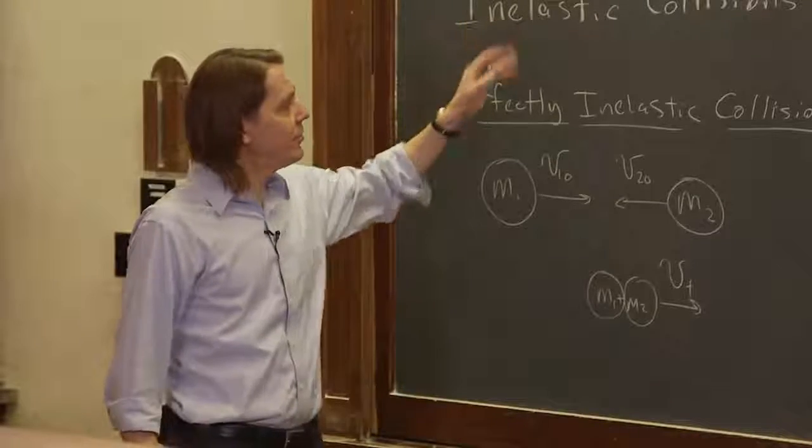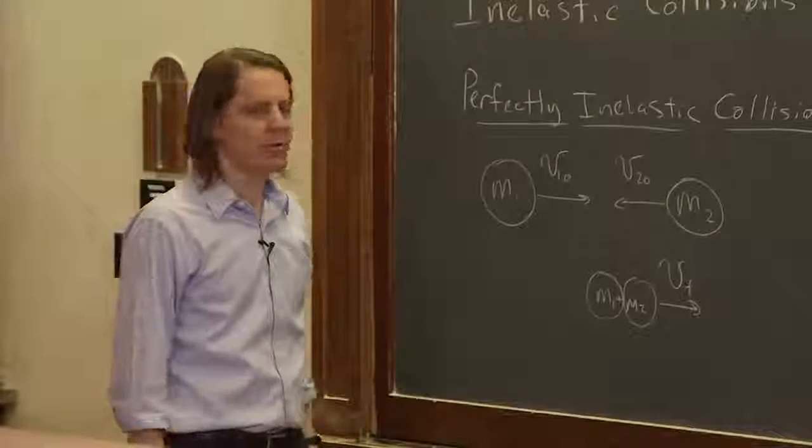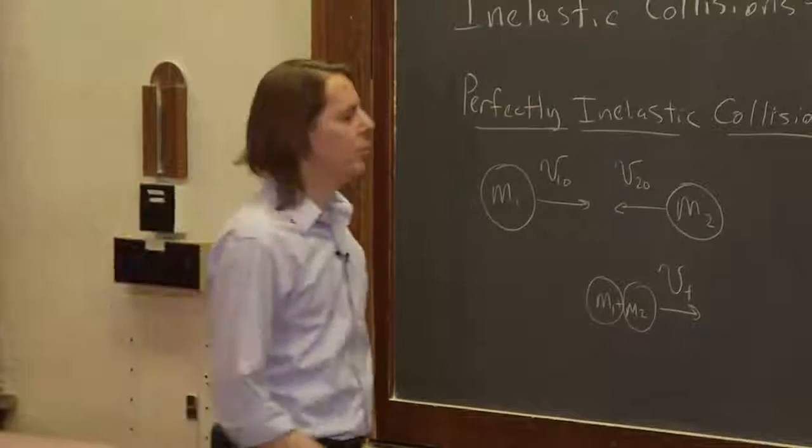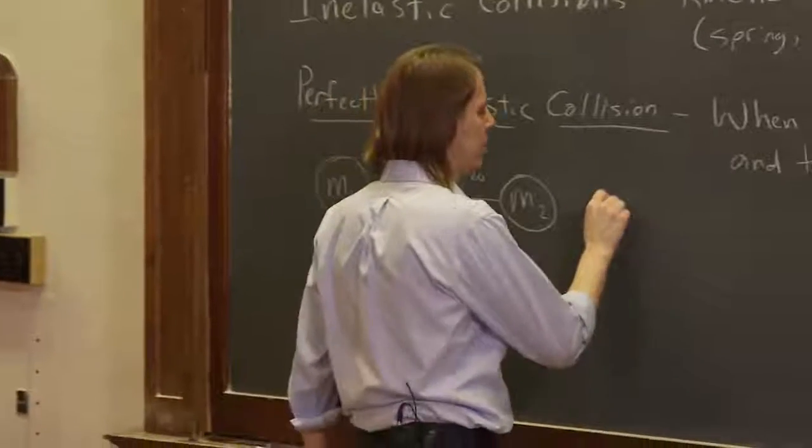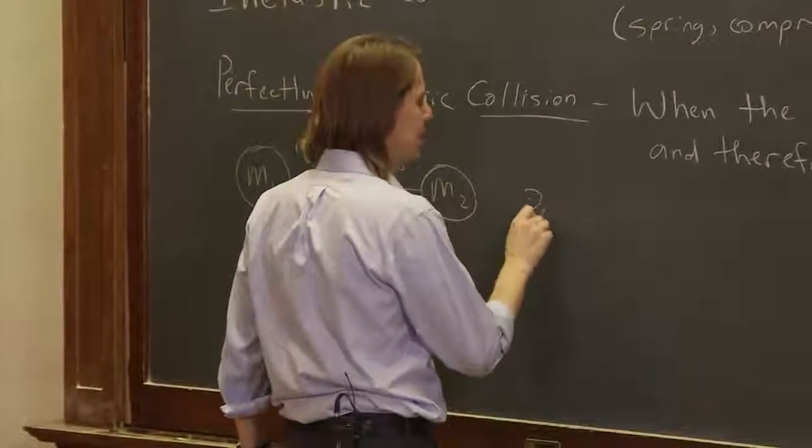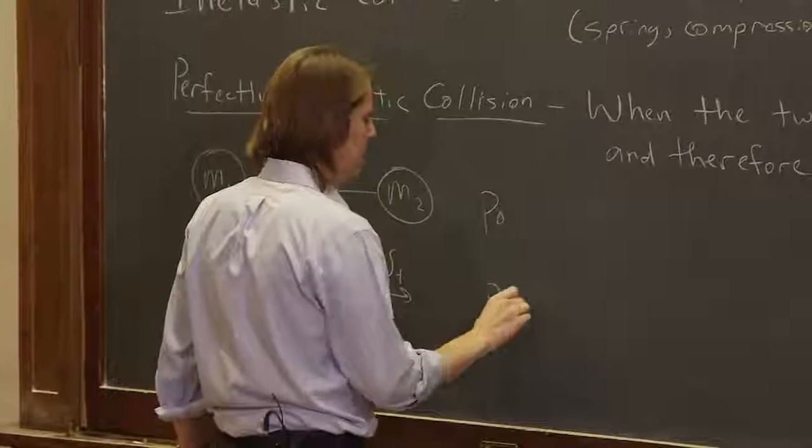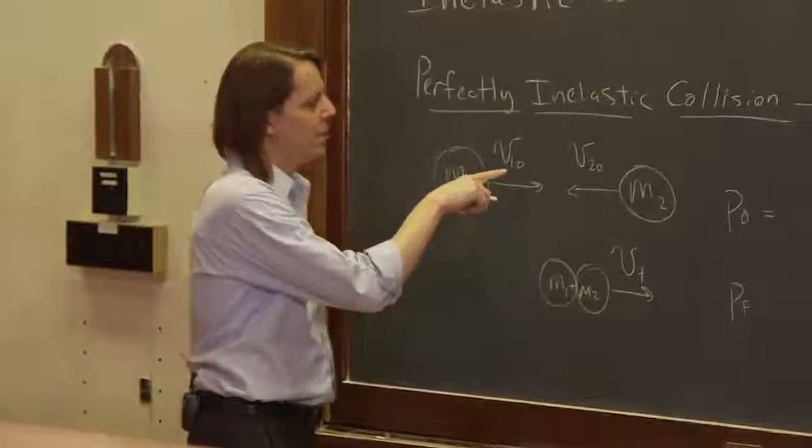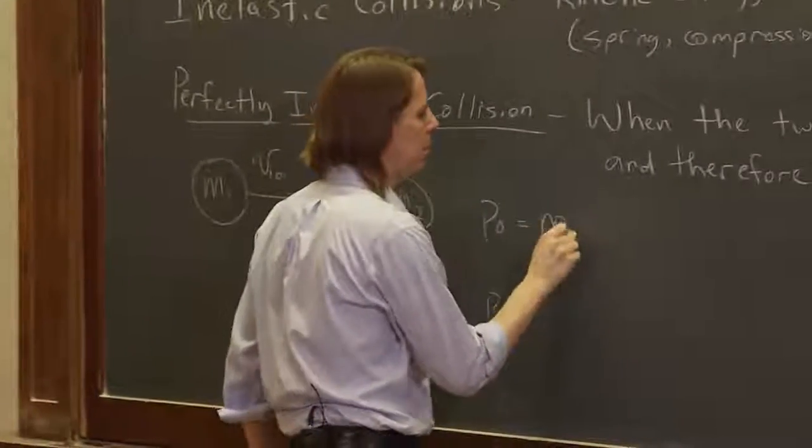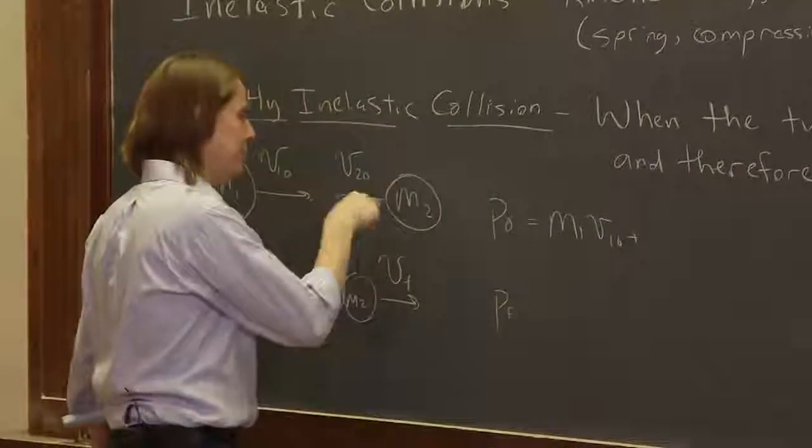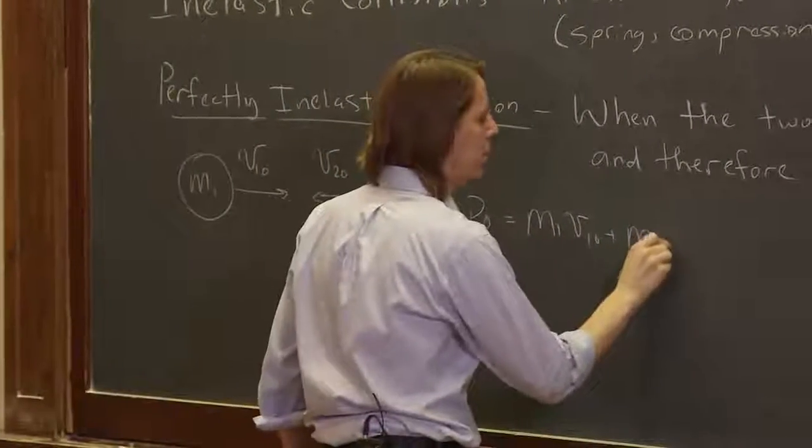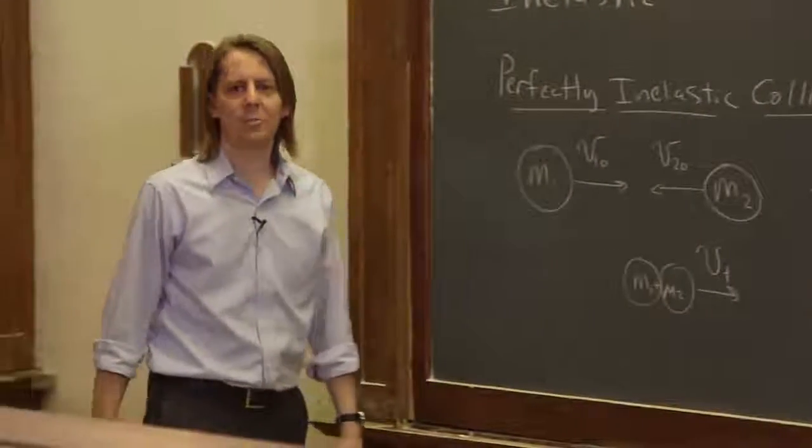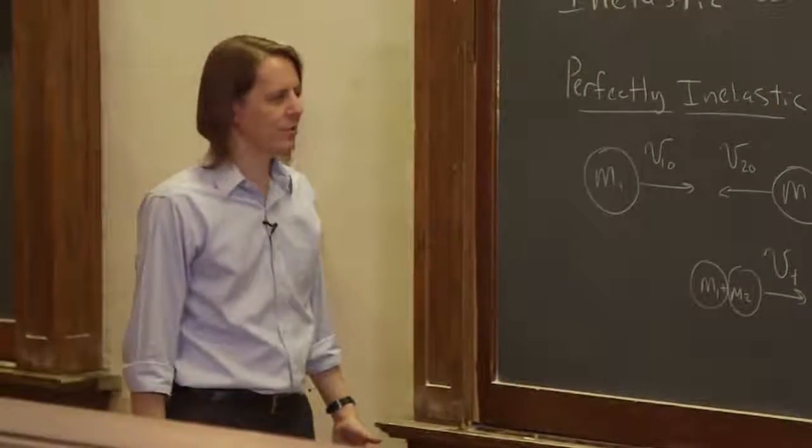So even though we may have lost kinetic energy, we always conserve momentum. There's no external impulses here. So the P, the momentum initial, I'll call it P knot, must equal P final. So P knot is going to be M1 V1 knot plus M2 V2 knot. Now, the velocity is a vector, the direction matters. So we do have to treat this as a vector.